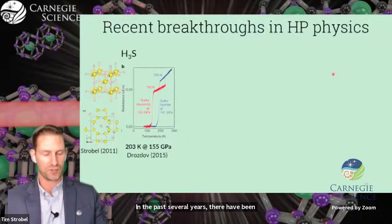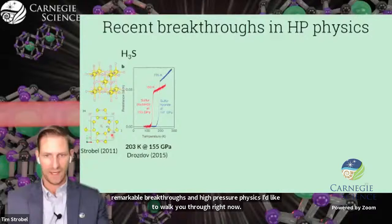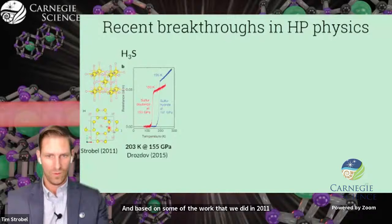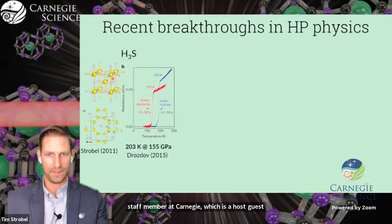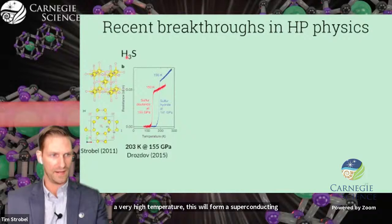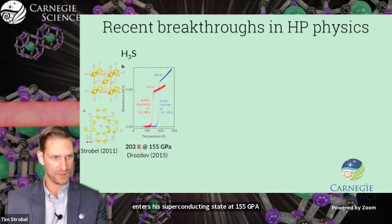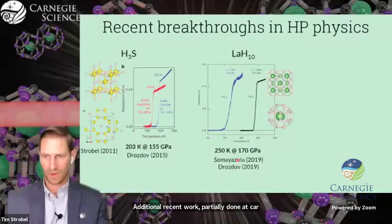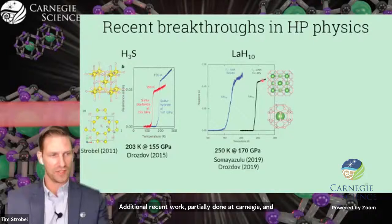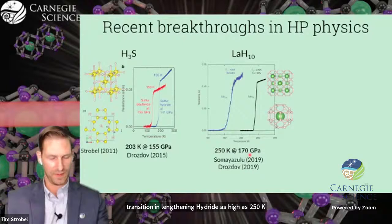In the past several years, there have been a couple remarkable breakthroughs in high-pressure physics. Based on some of the work that we did in 2011, this was the first paper I published as a staff member at Carnegie, which is a host-guest structure of hydrogen and hydrogen sulfide. When compressed to very high temperature, this will form a superconducting structure called H3S. Drozdav and coworkers had shown that this enters a superconducting state at 155 GPA and 203 Kelvin.